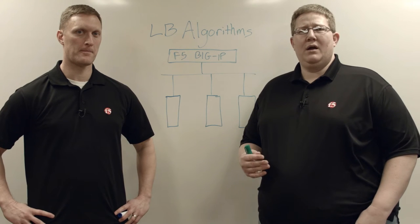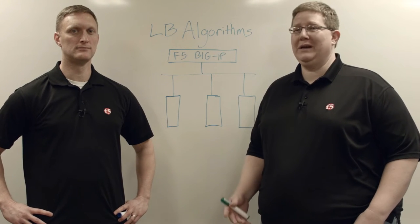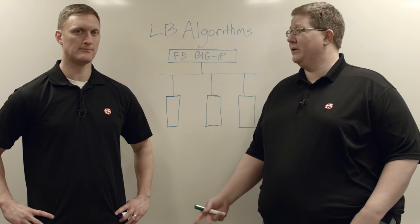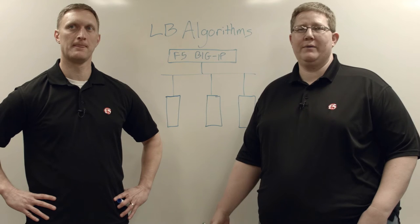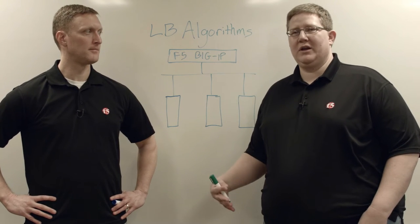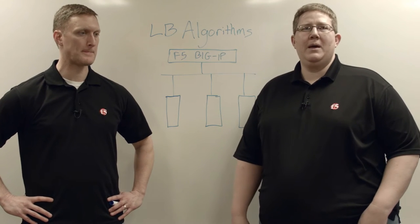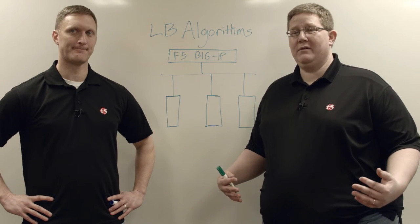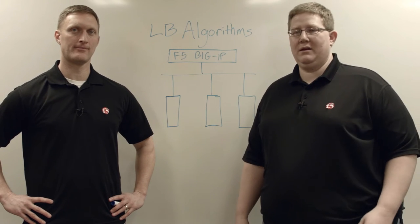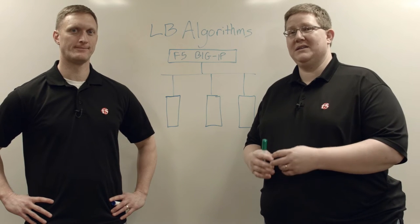On the local traffic manager, we have the static algorithms which don't need any outside information to make a decision. We'll talk about two of those today with round robin and ratio, at least connections as well, which looks at the connection table to make those determinations. But then when we get into GTM, we'll have a tiered decision that's made. It first makes the decision between pools at the wide IP, and then it makes a decision within the pool.